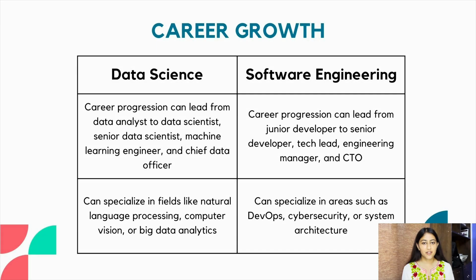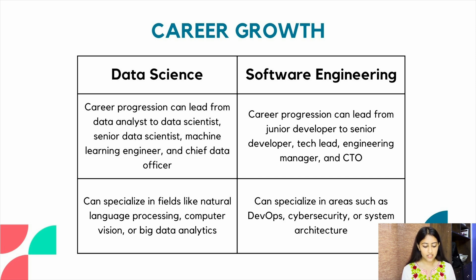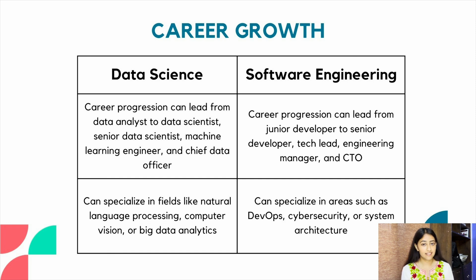Last but not least is career progression. In data science, the path can go from data analyst to data scientist, senior data scientist, machine learning engineer and ultimately chief data officer. In software engineering, progression goes from junior developer to senior developer, tech lead, engineering manager and eventually CTO. You can also specialize — in data science in natural language processing, computer vision or big data analytics, and in software engineering in DevOps, cyber security or system architecture.